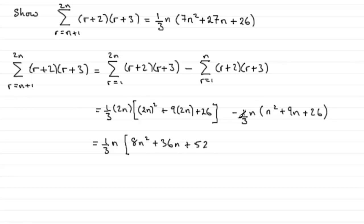Now for this bracket, we've got 1/3·n out the front, so it leaves us with minus of all these terms. So it's going to be -n² -9n -26.